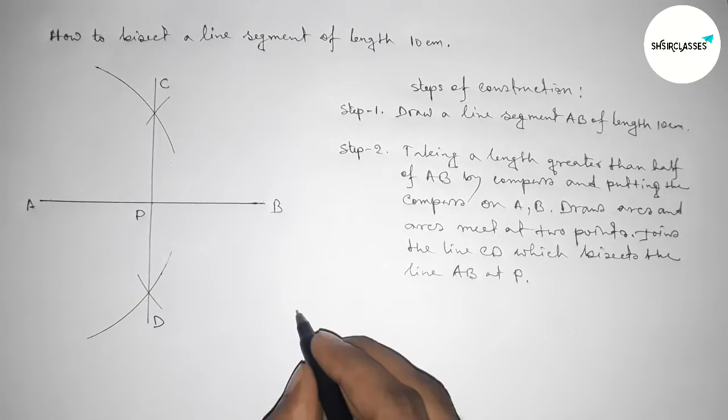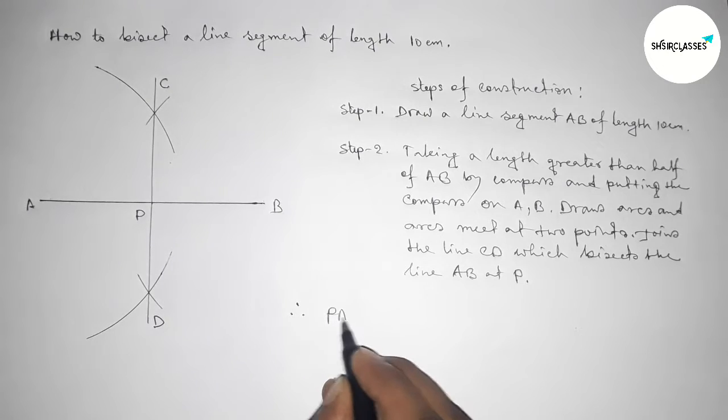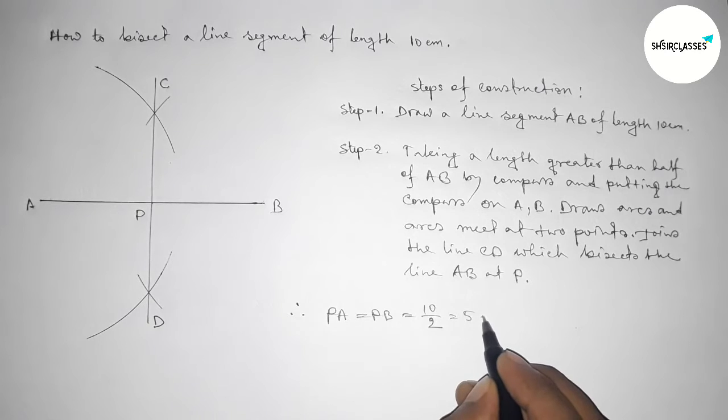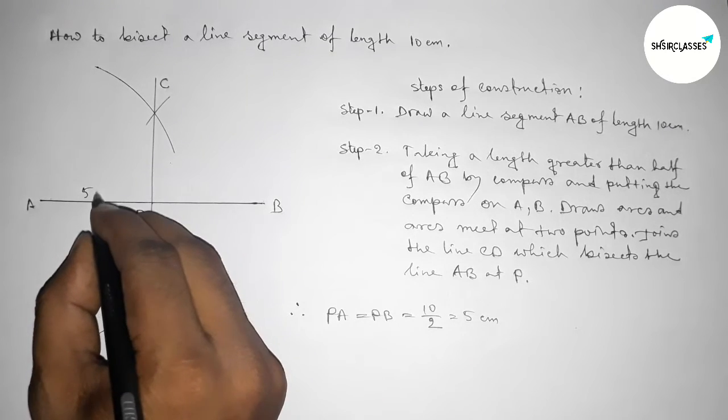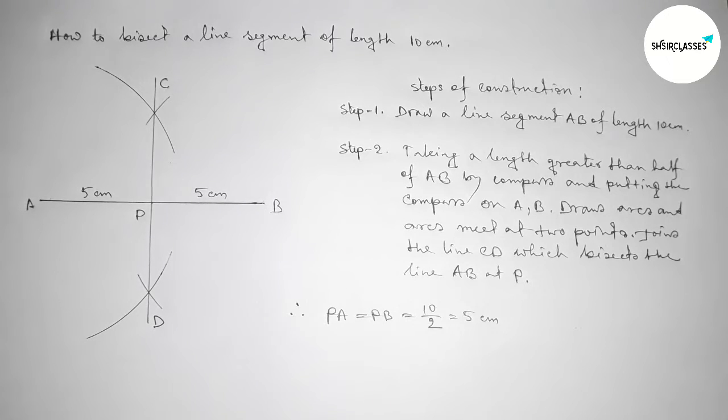So therefore the length PA and PB are equal. So PA equals to PB equals to 10 by 2, so this is obviously 5 centimeter. This is 5 centimeter, this is 5 centimeter. Now I am going to check this.